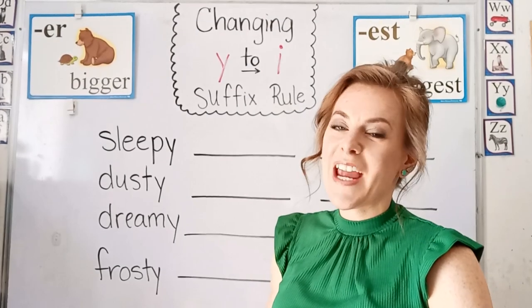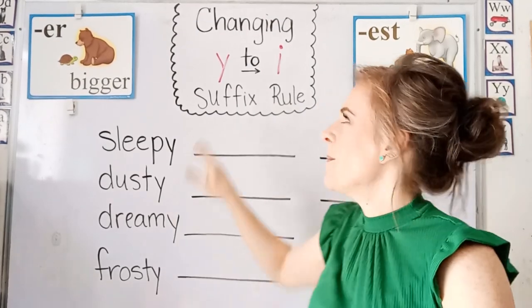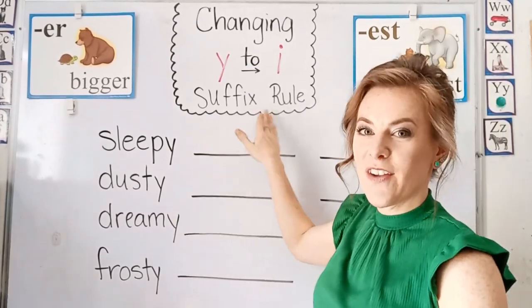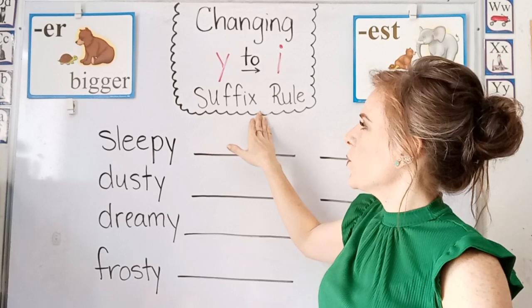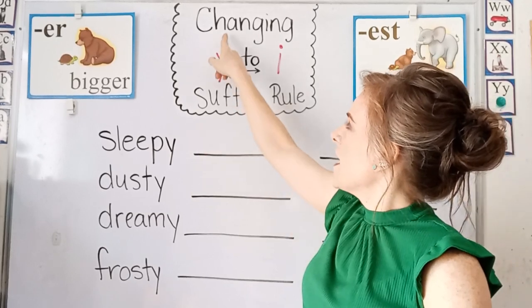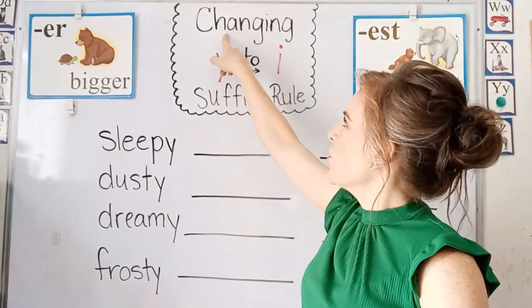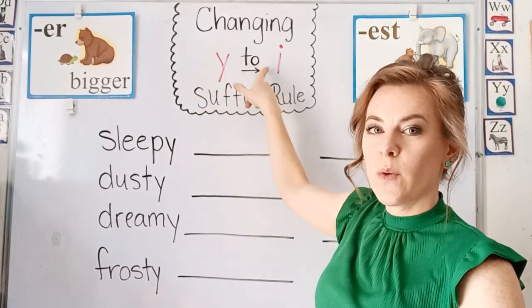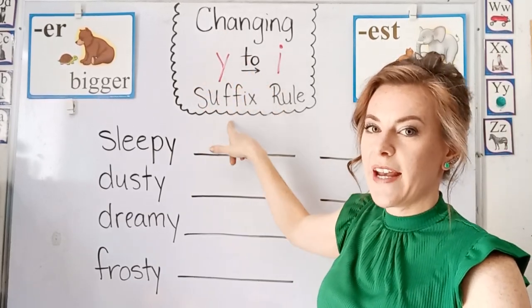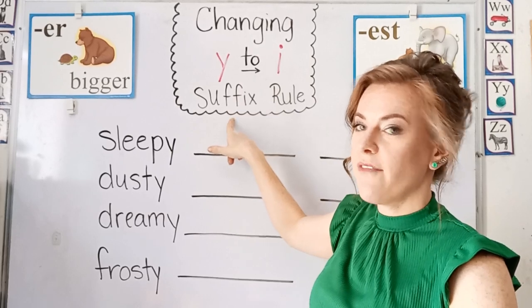Hello students. Today we're going to talk about another suffix rule. This suffix rule talks about changing a Y to an I when you're adding a specific suffix.